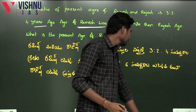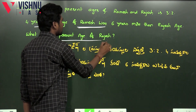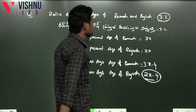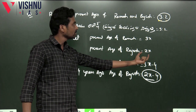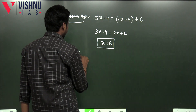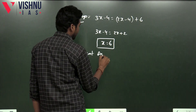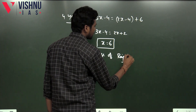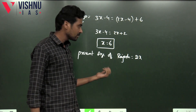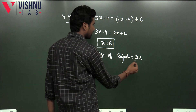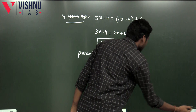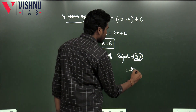Now we have to answer the final question: What is the present age of Rajesh? The present age of Rajesh is 2x. That is the present age of Rajesh. So the present age of Rajesh is 2x, and x is 6, which gives us 2 times 6, which equals 12.